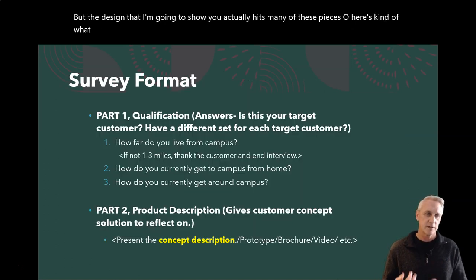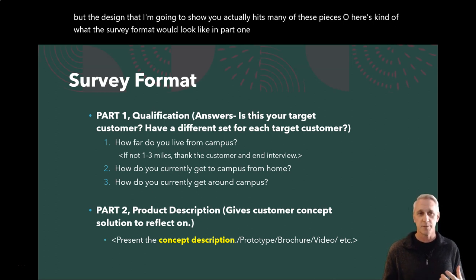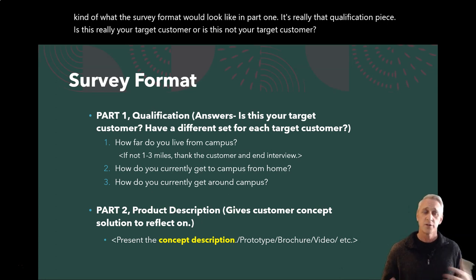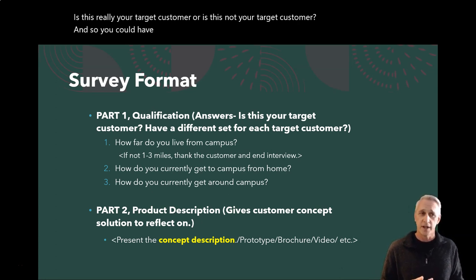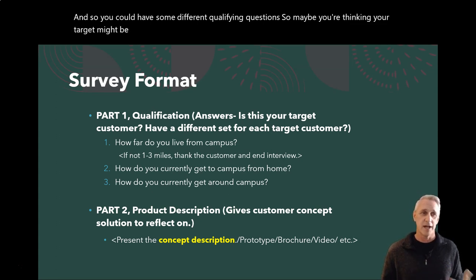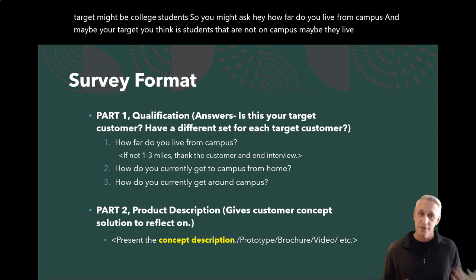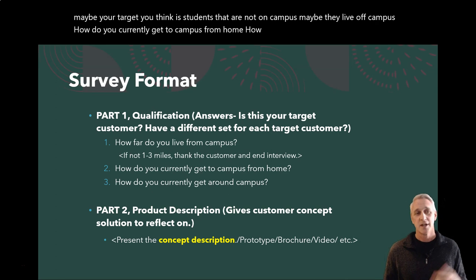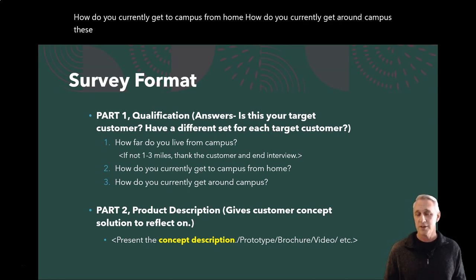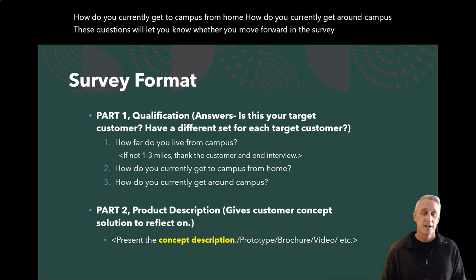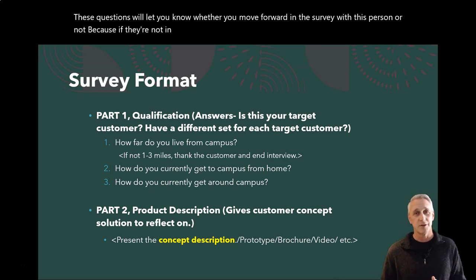Here's what the survey format looks like. In Part One, it's really that qualification piece — is this really your target customer or not? You could have some different qualifying questions. So maybe you're thinking your target might be college students. You might ask, how far do you live from campus? Maybe your target is students that are not on campus — they live off campus. How do you currently get to campus from home? How do you currently get around campus? These questions let you know whether you move forward in the survey with this person.